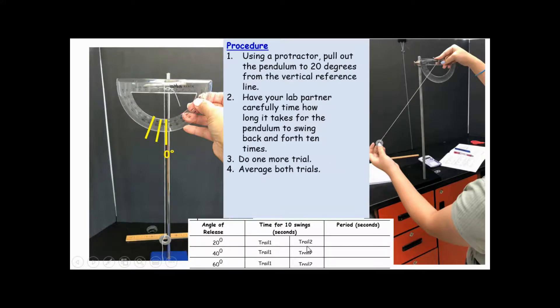Then, when you have both trials complete, average both and you need to now divide by 10 and record your result in the period column. So here is the final time for 20 degrees.